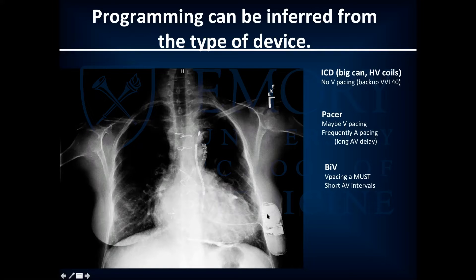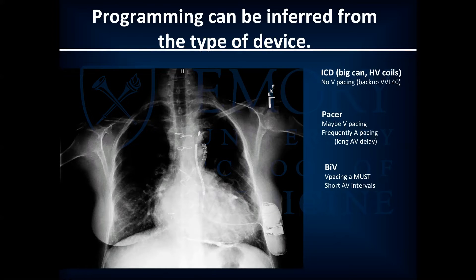This is a high voltage can under the left lateral thorax and a high voltage coil right along the sternum — this is a young congenital patient, and this is a subcutaneous ICD. It's important to identify sub-Q ICDs because the ER often assumes the patient can be paced, but this device does not pace except in the rare instance where it shocks someone and delivers high-impulse pacing for about 10 seconds.